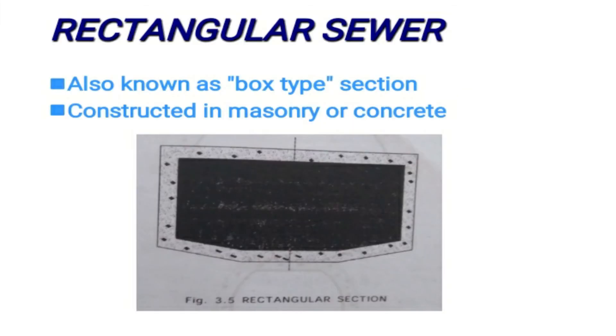First, we can look at rectangular sewers. The rectangular sewer is also known as the box type section and can be constructed in masonry or concrete.